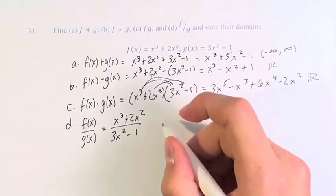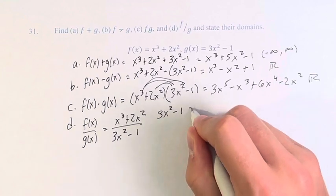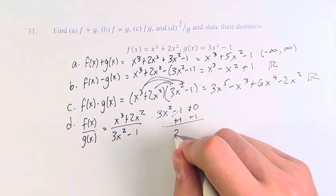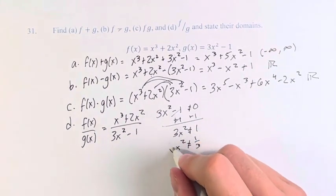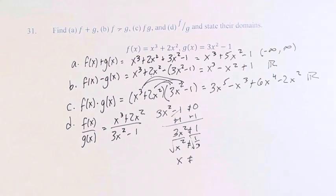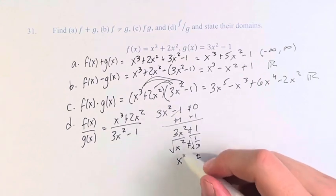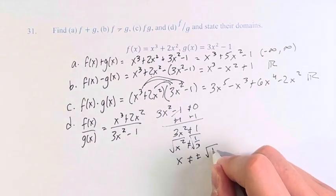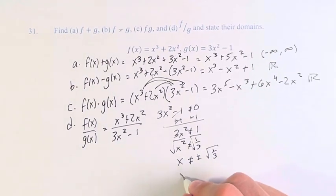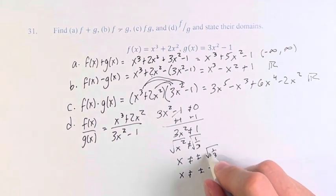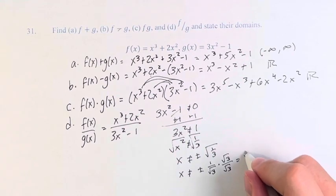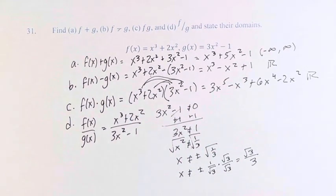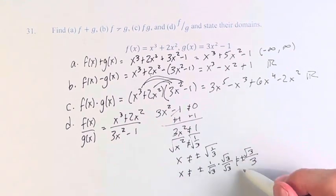Here we do have a restriction. The denominator cannot be equal to 0. So 3x squared minus 1 cannot be equal to 0. Plus 1 on both sides. 3x squared cannot be equal to 1. x squared cannot be equal to 1 third. Therefore, taking the square root of both sides, x cannot be plus or minus, right? Since we don't know whether x is positive or negative. The square root of 1 third, x cannot be plus or minus. Square root of 1 is 1. Square root of 3 cannot be simplified. And if we multiply both sides by the square root of 3, we get that we have the square root of 3 over the square root of 3 squared is just 3. And make sure it's still plus or minus. So x cannot be equal to plus or minus the square root of 3 over 3.